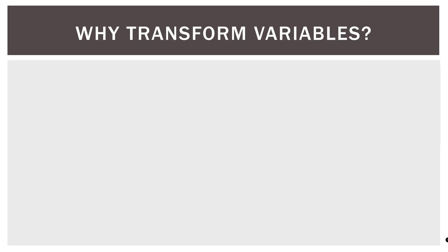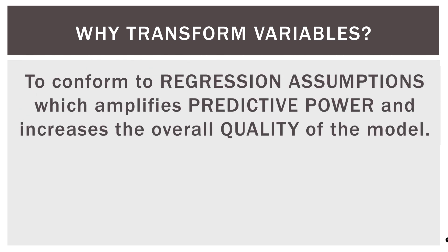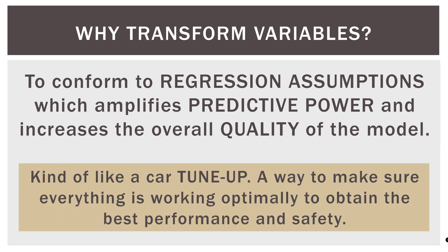First, two quick review slides from previous videos in this playlist, and I promise I will go through them very quickly. So why do we transform variables in the first place? We transform variables to conform to regression assumptions, which amplifies predictive power and increases the overall quality of the model. The metaphor I use is like a car that's not tuned up. If your car is not tuned up, it will run, but it won't run optimally. So we'll get the car tuned up and everything's working properly and it runs much better. Same thing here. We transform variables to fit to the assumptions of regression, and that cascades down into better predictive power and overall model quality.